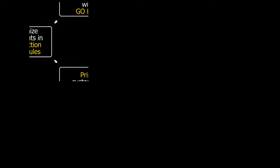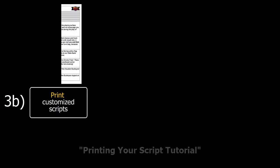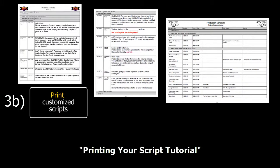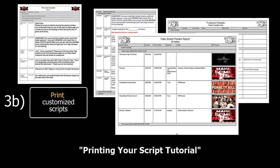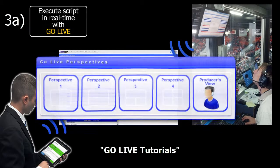Once you are done building a production schedule, it's time to execute the event. To do so, you will have two different and unique options. The first option is the ability to print your scripts in multiple uniquely customized templates. The second option is running your events in Go Live. Go Live is TSC's patented solution that allows for scripts to be executed on computer and mobile devices live and in real time with five unique and customizable perspectives.